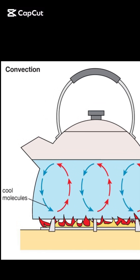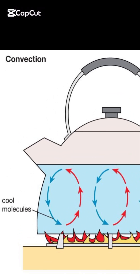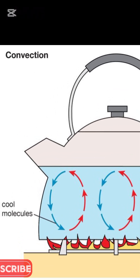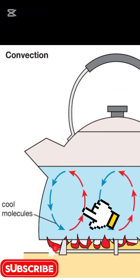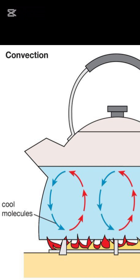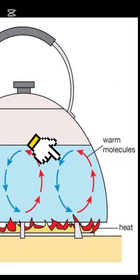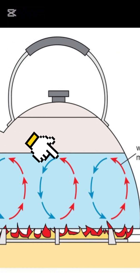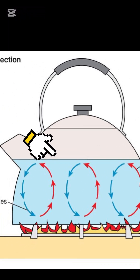Convection is a process where heat is transferred through the movement of the molecules. In this kettle, heat from the stove warms the water at the bottom. The warm molecules rise while the cooler molecules sink, creating a continuous cycle of movement.